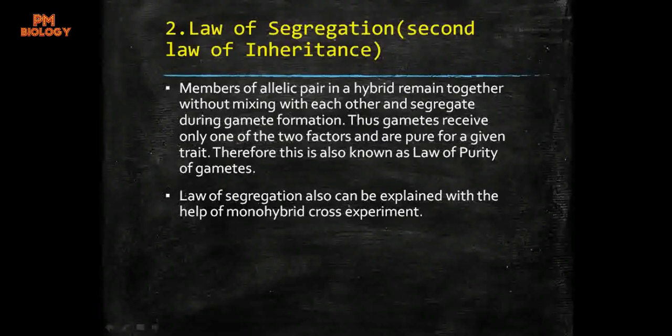The second law is the law of segregation. It says that members of an allelic pair in a hybrid remain together without mixing with each other, and segregate during gamete formation. Thus gametes receive only one of the two factors and are pure for a given trait. Therefore it is also known as the law of purity of gametes. This law can also be explained with the monohybrid cross.